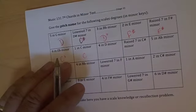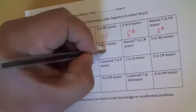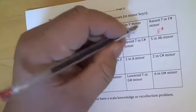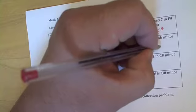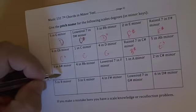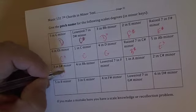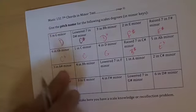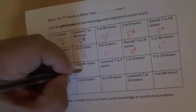G raised seven will be B sharp, half step below. Five, we go A flat, C flat. Three in A sharp minor will be C sharp because a minor third above – root, third, fifth of this chord. Four will be E flat.